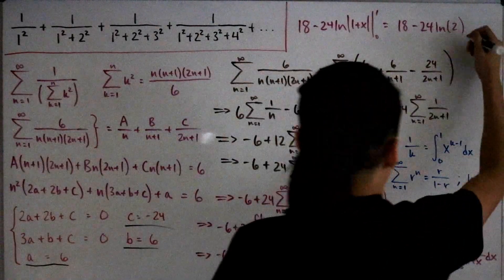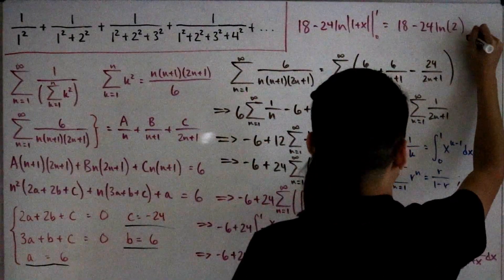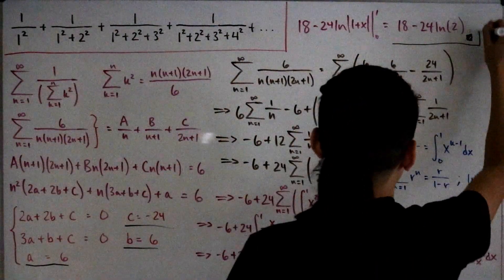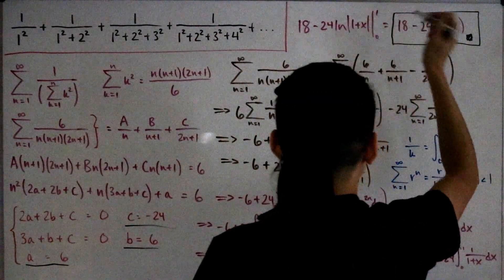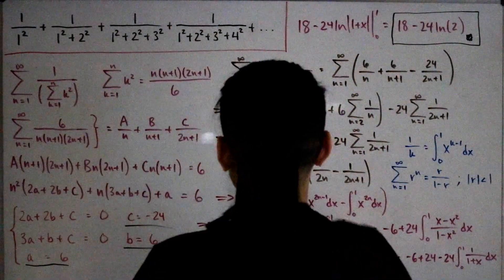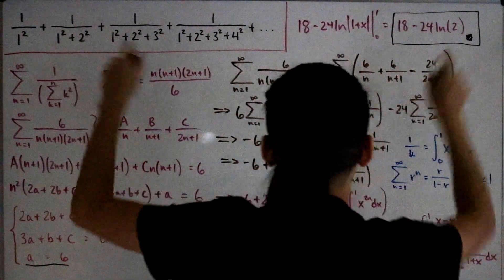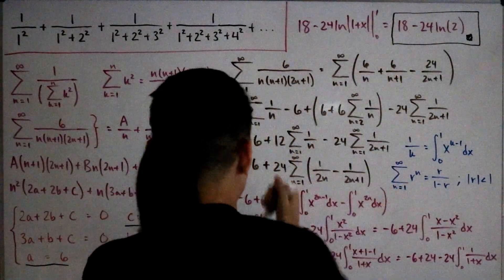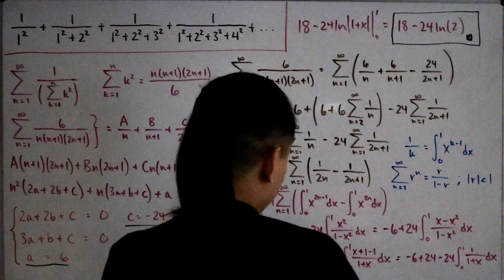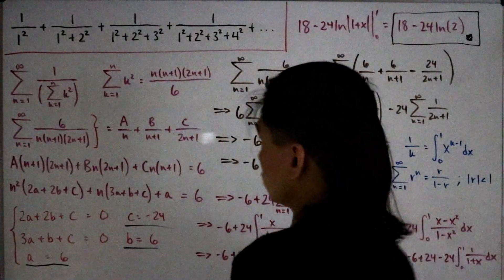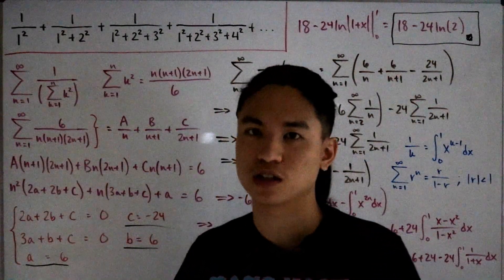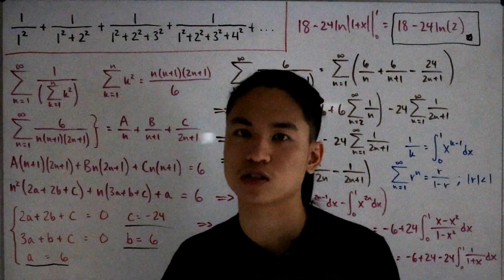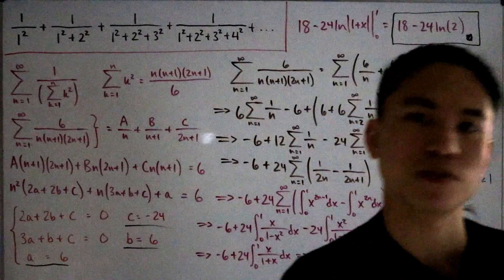I'll box that in. This indicates the end of the solution. We didn't formally prove the starting equality, but we found the value of the summation, which comes down to 18 − 24·ln 2. Pretty similar method to the previous video — everything just comes together nicely.